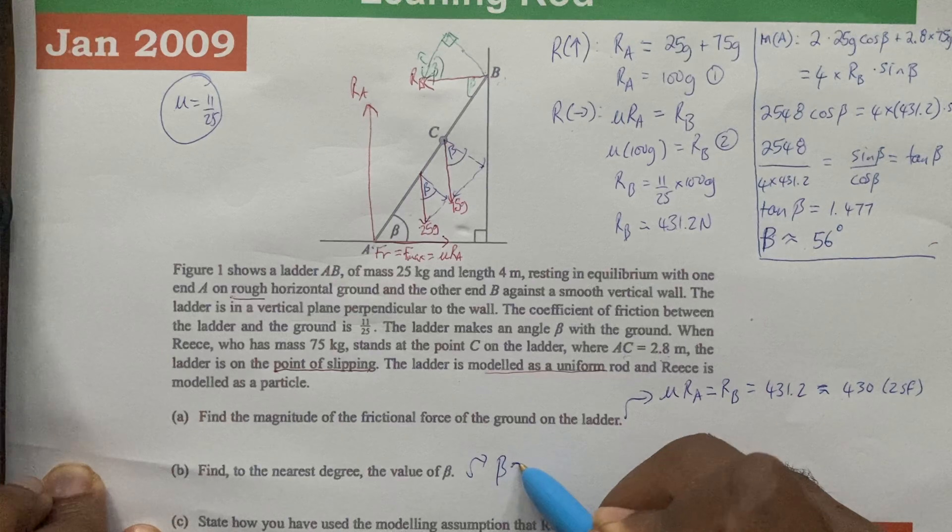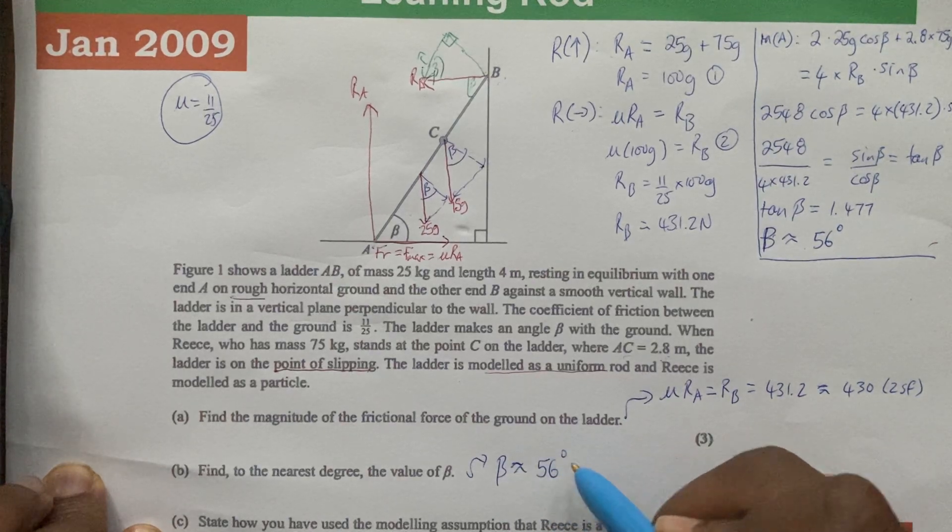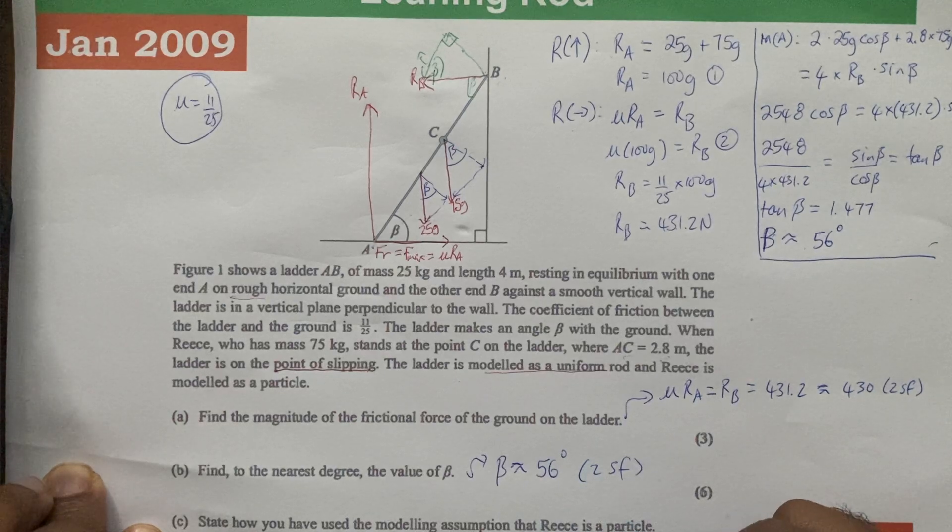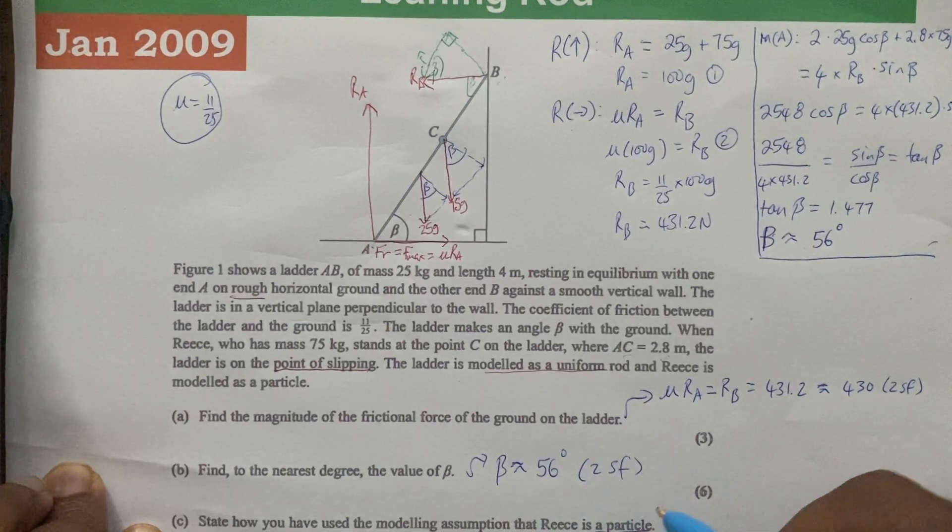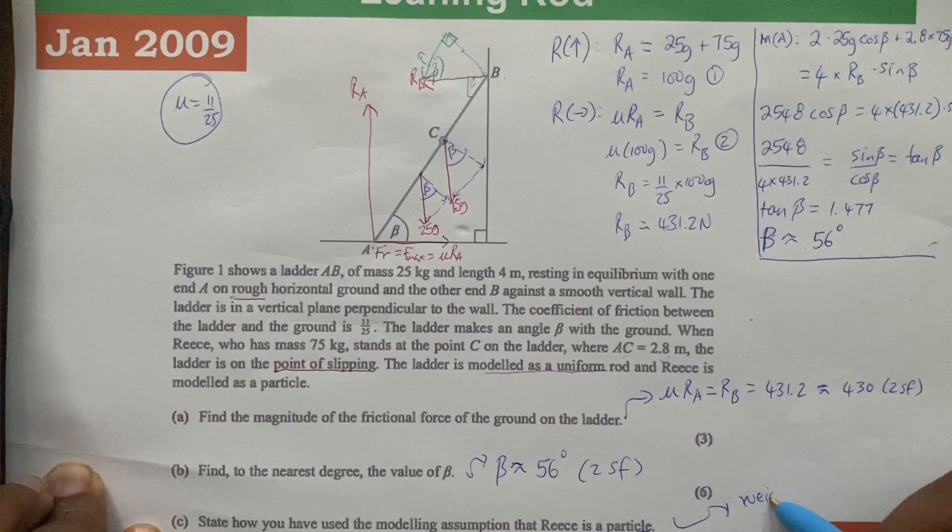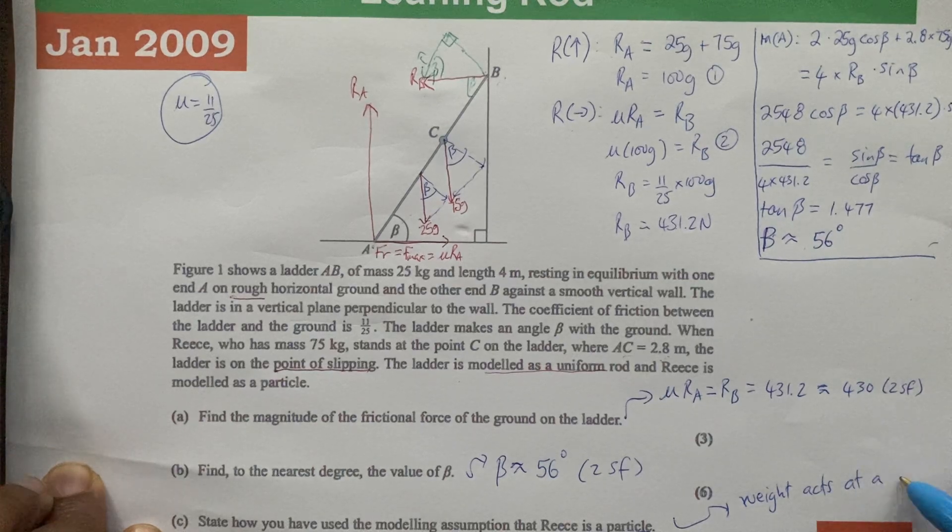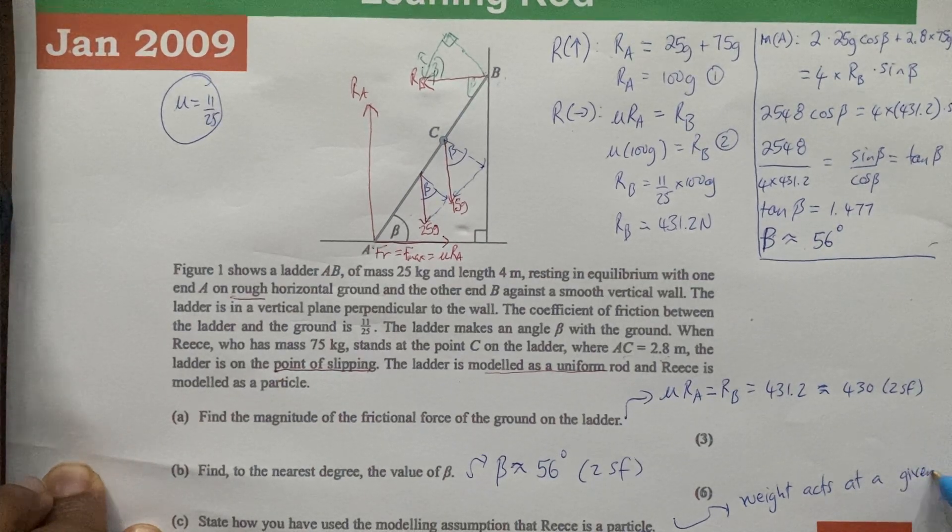For the next bit, we have already answered this. We know that beta is approximately equal to 56 degrees, again two significant figures. State how you have used the modeling assumption that Reese is a particle. This means that his weight acts at a given point.